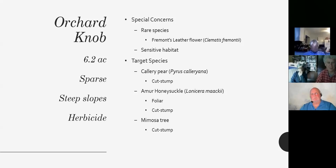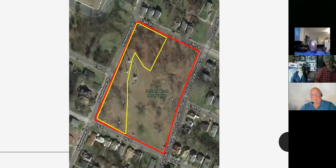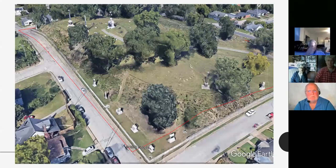We were looking at removal of Callery pear — Orchard Knob is downtown Chattanooga surrounded by residential areas, and Bradford pear is a popular ornamental tree that escapes cultivation and reverts to its wild type, Pyrus calleryana. We were attacking that with cut stump treatment, along with lots of Lonicera maackii and several mimosa trees. The steep slopes here presented a greater risk of soil erosion, making hand pulling methods inappropriate — we didn't want to disturb that soil.